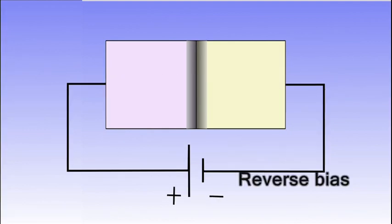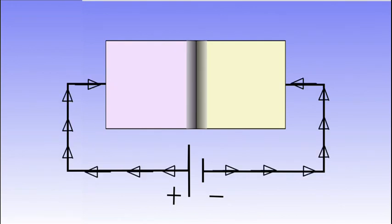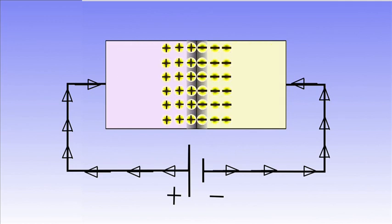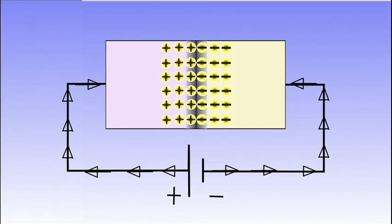When the diode is reverse biased, the holes from the P-side will get attracted towards the negative terminal of the supply, and electrons from the N-side are attracted towards the positive terminal. Hence the depletion region increases, so no electron flow from the junction means no current.